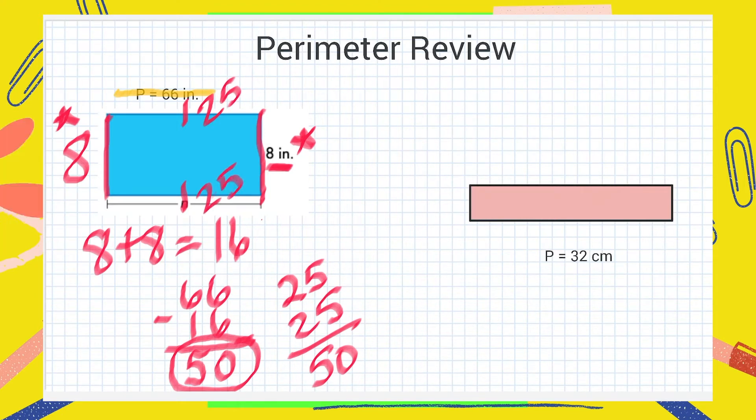Have I found the missing side length? Yes I have! Now let's double check just to be sure. If the total perimeter is 66 inches then that means all of these sides equal 66. Very good! So let's check. 25 plus 25 equals 50. Very good! 50 plus 8 inches equals 58 inches, 58 inches plus another 8 inches equals 66 inches. Excellent! So the answer to the missing side length of this problem is 25 inches. N equals 25 inches. Pat yourselves on the back, that was really good!